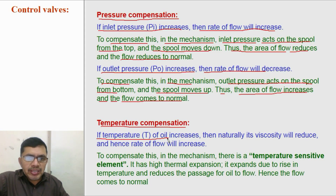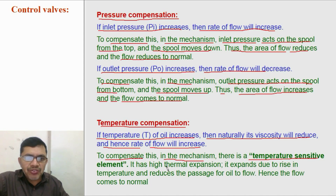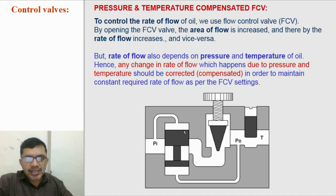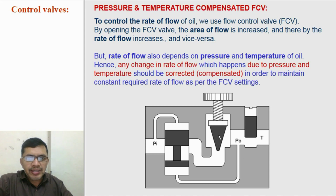Temperature compensation mechanism: if the temperature of oil is increased, then naturally its viscosity will reduce, due to which the rate of flow will increase. To compensate this, in the mechanism, there is a temperature sensitive element with higher thermal expansion. It expands due to rise in temperature and reduces the passage for oil to flow. Hence the flow comes to normal. This valve is a pressure and temperature compensated flow control valve — it has a mechanism for compensating the rate of flow due to change in pressure and a mechanism for compensating the rate of flow due to change in temperature.